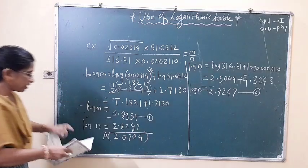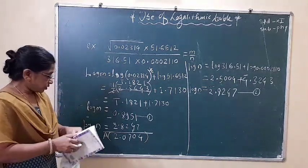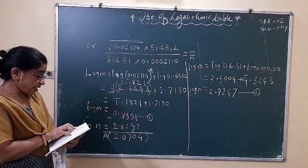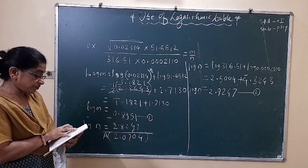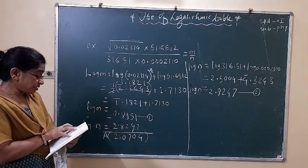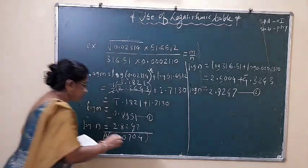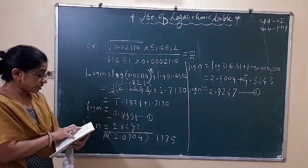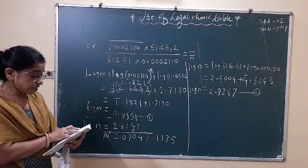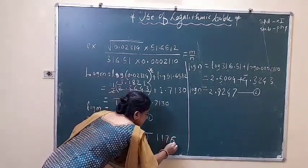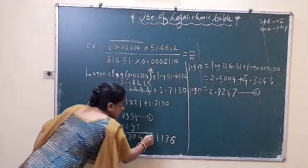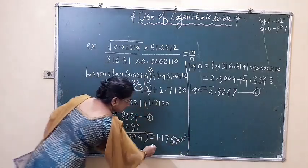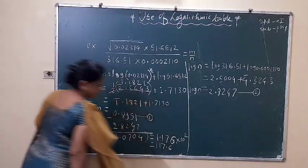Now find the antilog of this mantissa. See the antilog table: row 07, column 0: 1, 1, 7, 5. Mean difference in 4 is 1. By adding 1, we get 1, 1, 7, 6. Give the decimal point according to the characteristic: after 1 digit. So the answer can be written as 1.117.